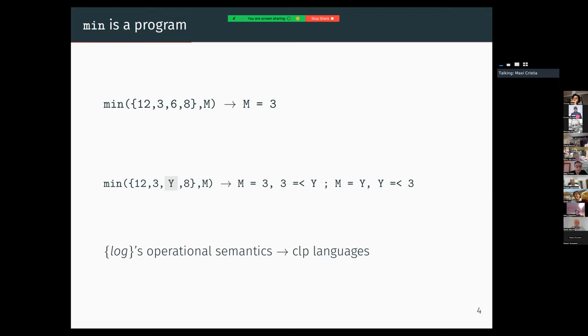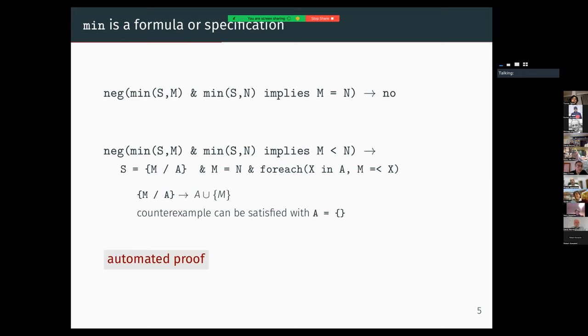But min is also a formula or a specification, so we can prove properties of this specification. For instance, if M is the minimum of S and N is the minimum of S, then these two values must be the same. There's only one minimum of a set.